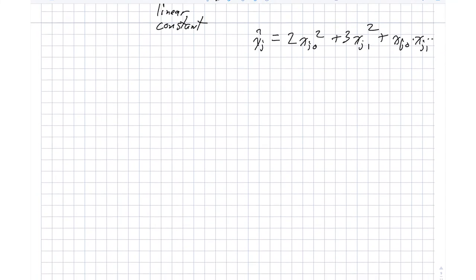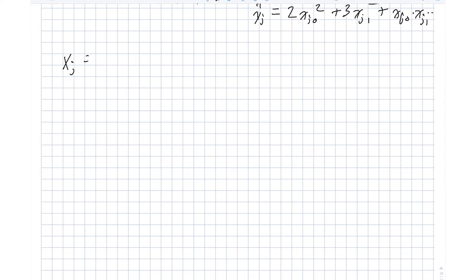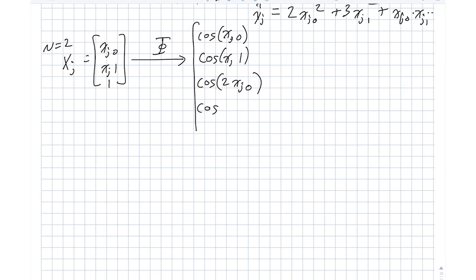One other type of phi, let me write this one out. So again, xj is, let's imagine, it's just an n equals 2 case. So we have an xj0, xj1, and a 1. And in this case, what phi does is say it might compute the cosine of xj0, and the cosine of xj1, and then the cosine of 2xj0, the cosine of 2xj1. And then the next pair of terms are 4 times xj0 and 4xj1.